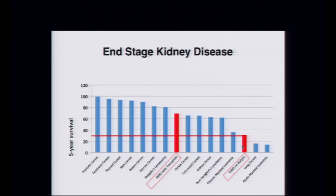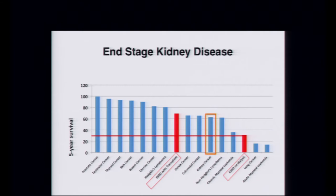Many people have the notion: why care about kidney disease when you have dialysis and transplantation? If you have end-stage kidney disease and you are on dialysis, you have about a 20–25% chance of living through five years — just a little better than lung cancer or AML, and largely worse than many common cancers. Renal cell cancer survival is actually slightly better than being on dialysis. It costs about $30 billion a year, which is 10% of the Medicare budget, despite these patients comprising only about 1% of the total population. You do better with a transplant, but very few people are able to get one.